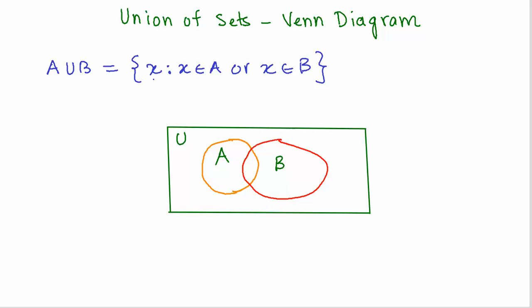Let us say we have this universal set, and then we have the set A which is represented by this orange circle, and we have set B which is represented by this red circle.